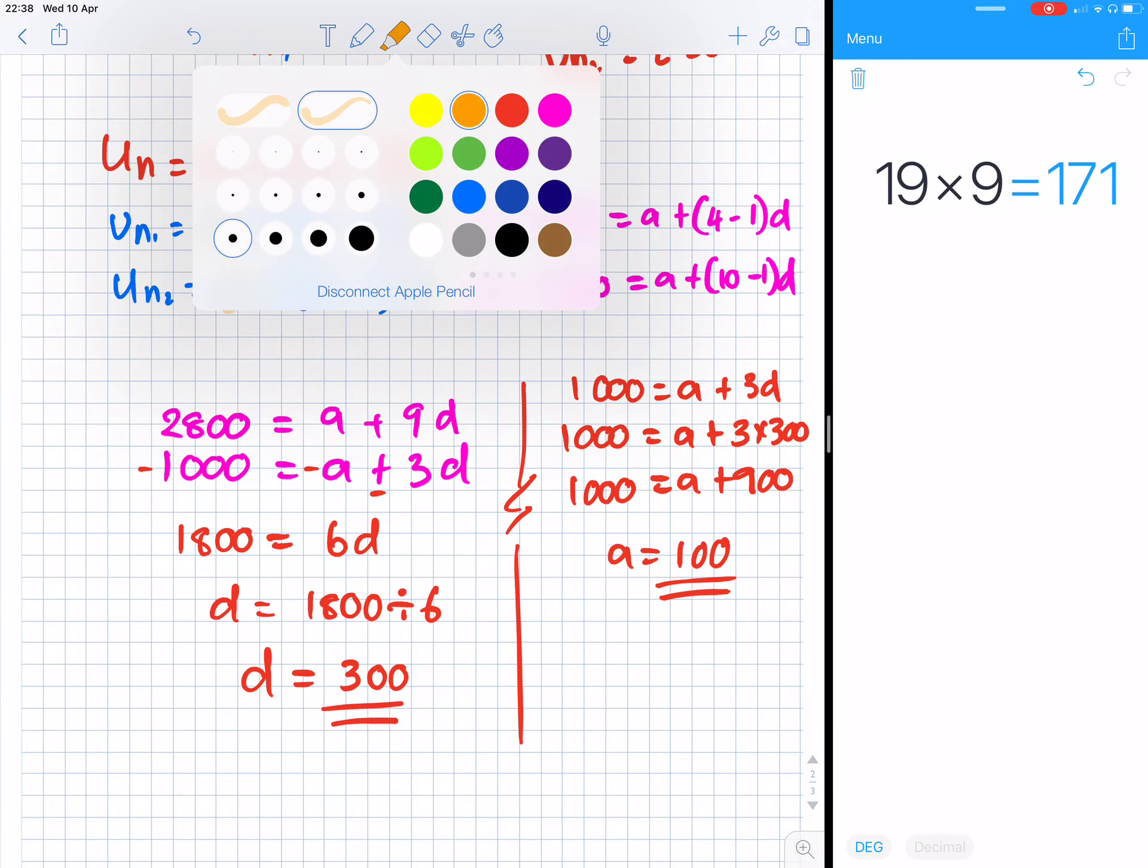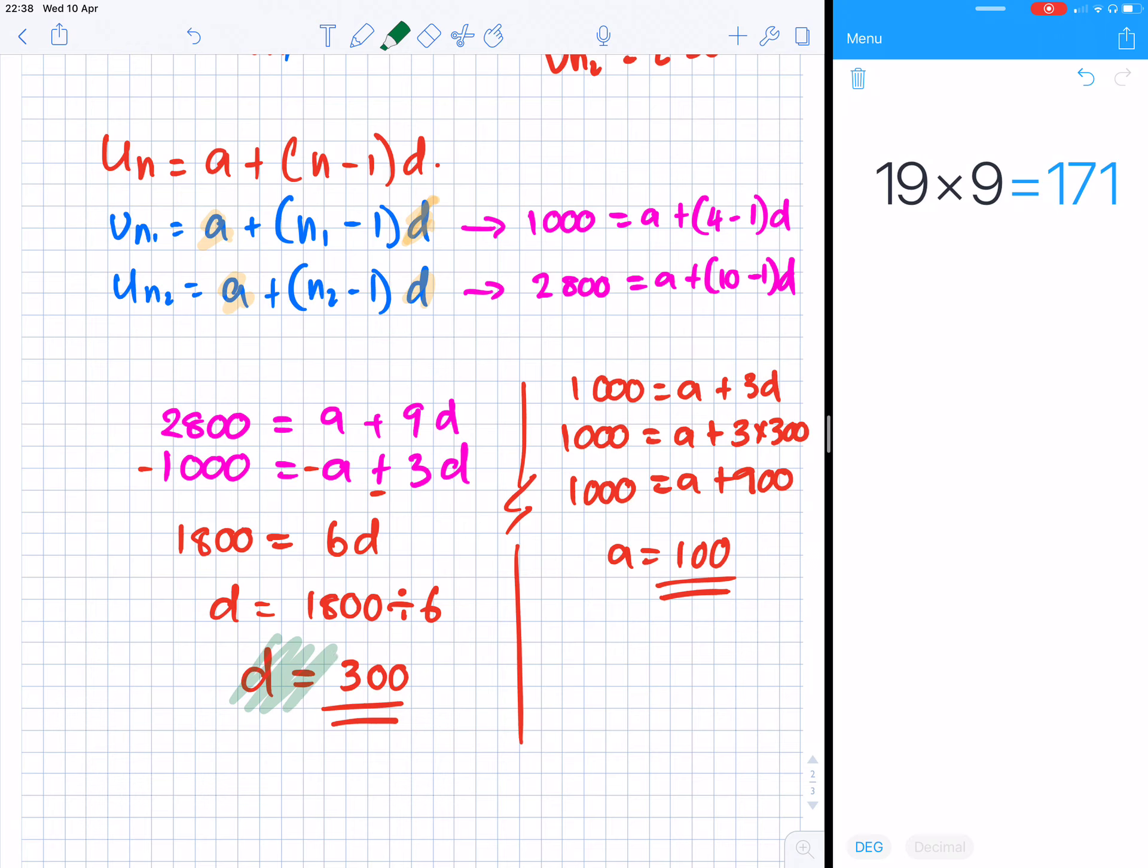If you want to, you can put them in this equation to see if that is true. So if a is 100 and d is 300, that gives you 2700 plus 100 is 2800, so those two are correct.